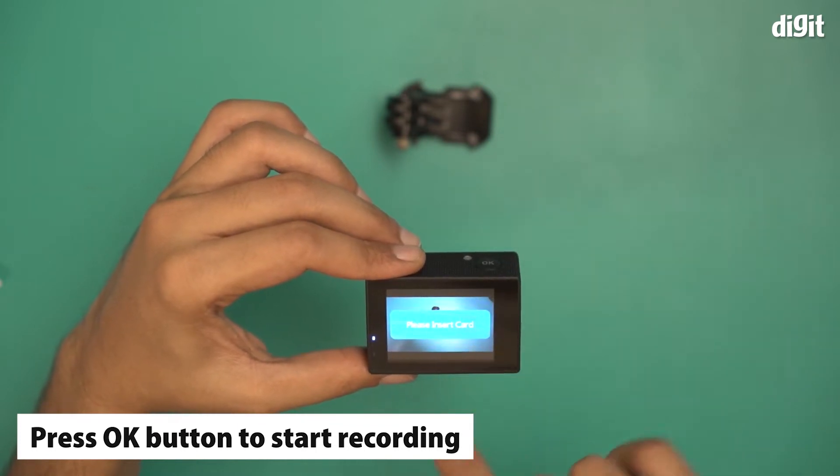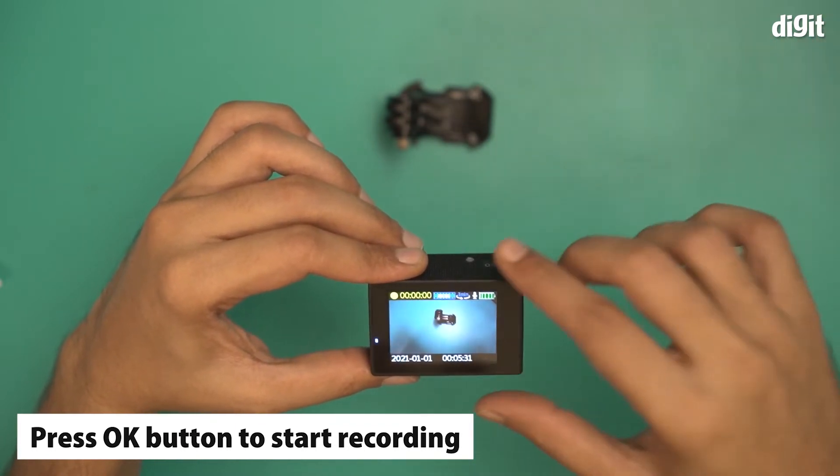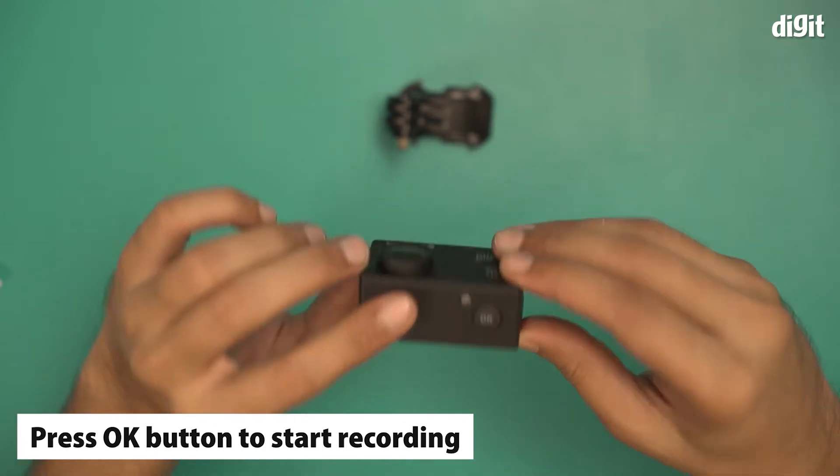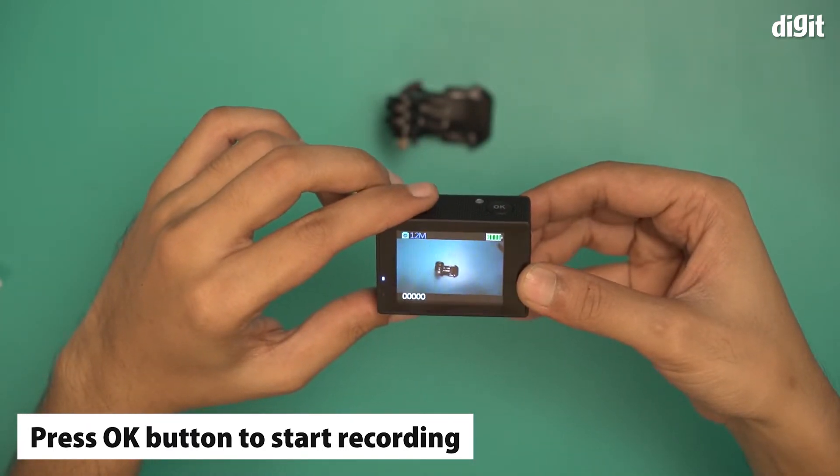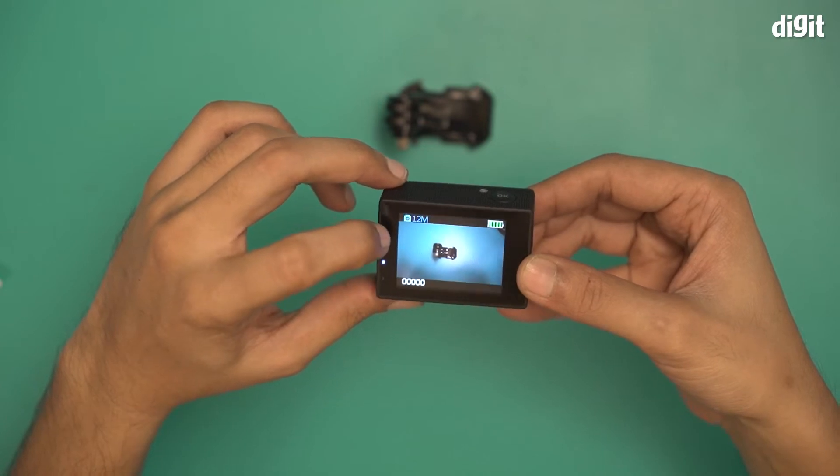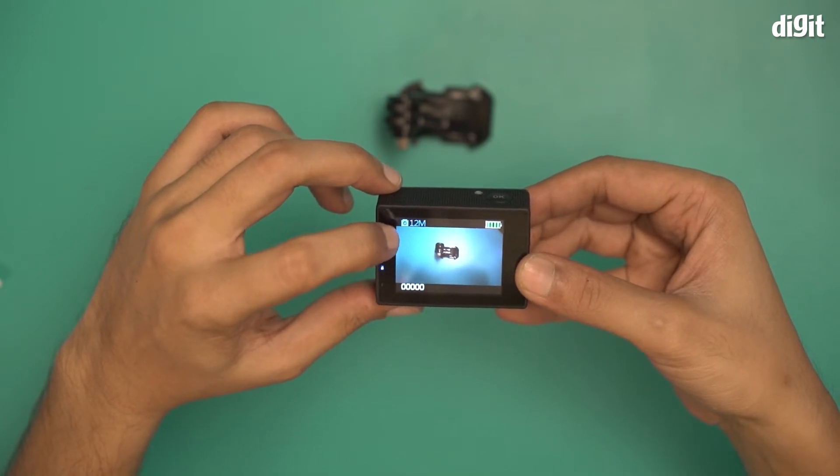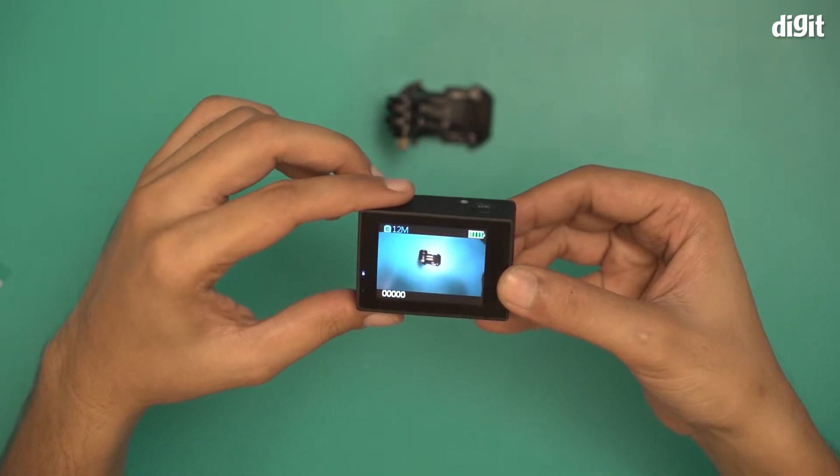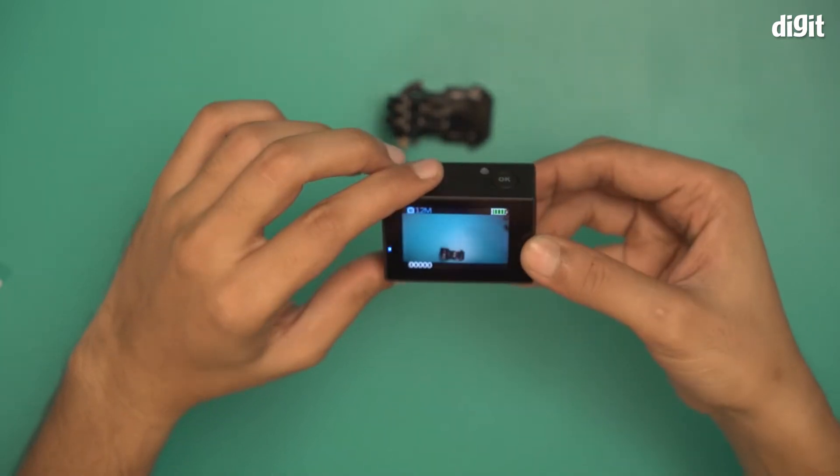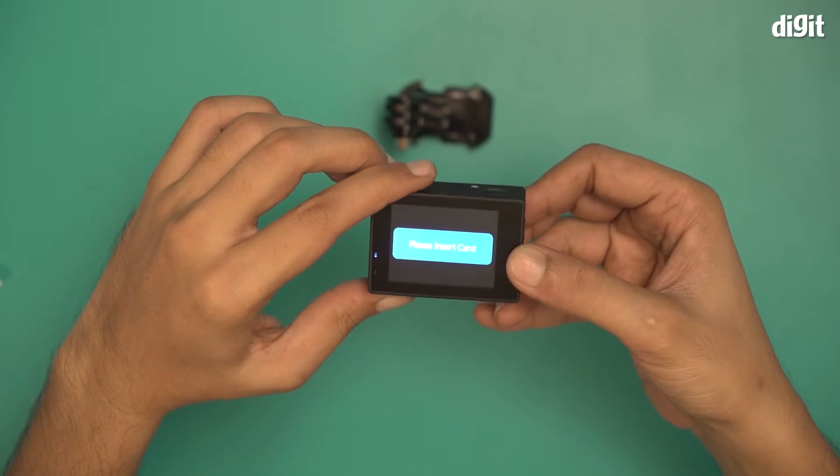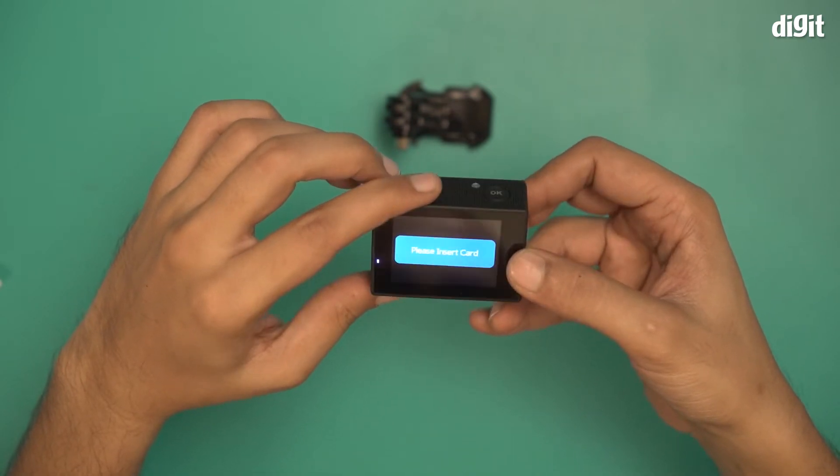Now if I press the front button once, it will take me to the photography mode. You'll notice there is a 12 megapixel sign right here. This particular action camera has a 12 megapixel sensor. If I press it again, it will start recording, but as you know, we don't have a card so it's not going to do that.